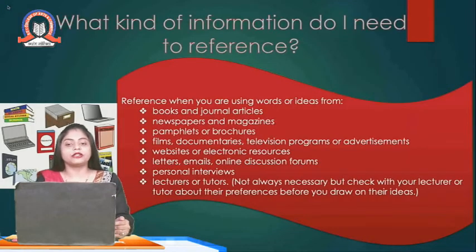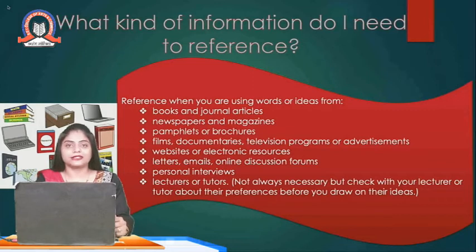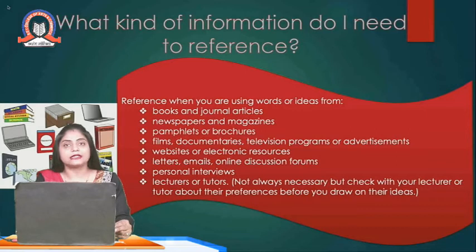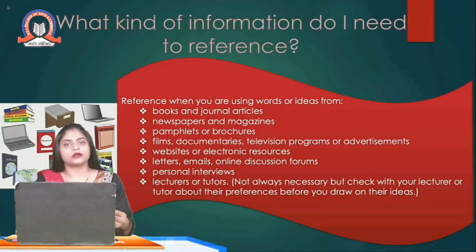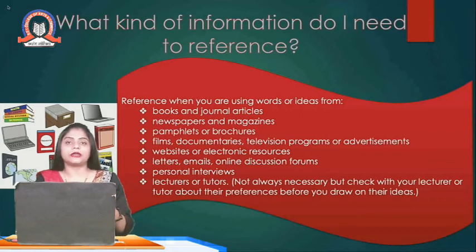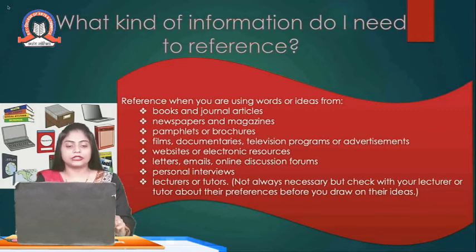What kind of information do we need to refer? If we are referring books and journal articles, we have to cite them. We might also be using newspaper articles or magazines, which we have to cite. Pamphlets or brochures used for any information in our research work also need to be mentioned. Any films, documentaries, or television programs — if we are taking any information from them — we can put a citation in our research work.